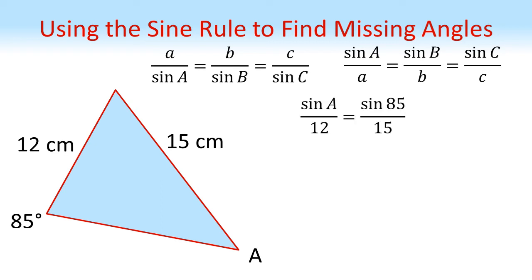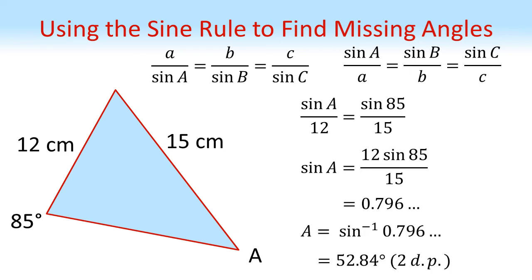So putting our values in, we get that sine A over 12 equals sine 85 over 15, again being careful to use angle and opposite side in the same fraction. Multiplying both sides by 12 gives us that sine A equals 12 sine 85 over 15, which is 0.796. Taking the inverse sine of both sides gives us A is equal to 52.84 degrees, again to two decimal places.